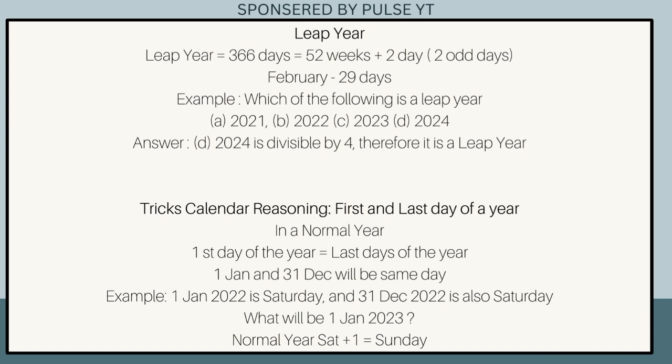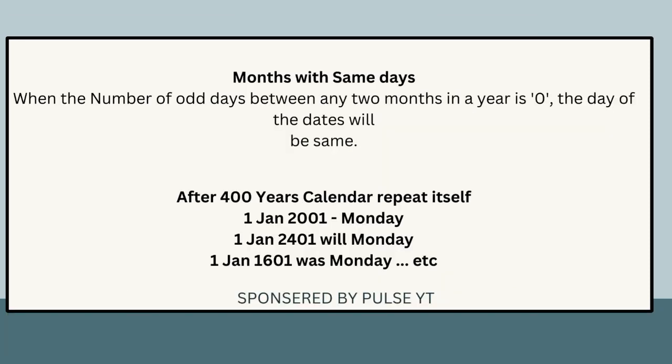Calendar reasoning trick — first and last day of a year: In a normal year, the first day equals the last day. The 1st of January and the 31st of December will be the same day. Example: The 1st of January 2022 is Saturday, and the 31st of December 2022 is also Saturday. Therefore the 1st of January 2023 is Sunday (Saturday + 1 odd day).